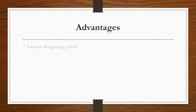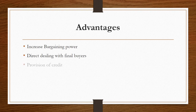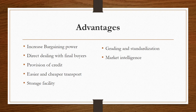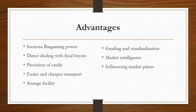Advantages of cooperative marketing: first, increasing bargaining power of farmers or producers; next, direct dealing with the final buyers so there are no intermediaries or middlemen; provision of credit; easier and cheaper transport and storage facilities; grading and standardization facilities for the whole produce; market intelligence or market news availability; and influencing market price — since they deal in large bulk quantities with a huge supply of a particular produce, they can influence the market price. Provision of inputs is also available through cooperative marketing.